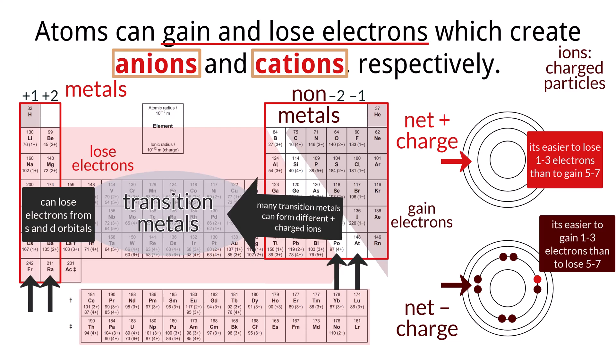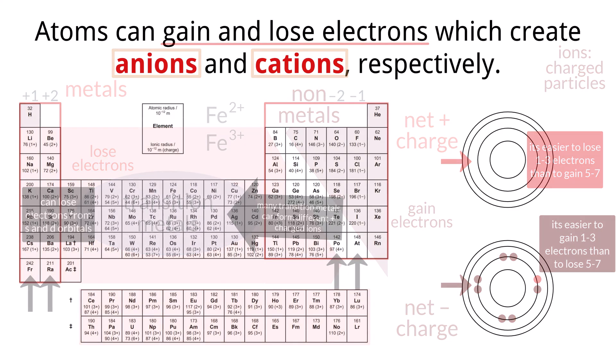For example, iron can commonly exist as iron 2, with a plus two charge, where it has lost two electrons, or as iron 3, with a plus three charge, where it has lost three electrons. The ability of transition metals to form ions with multiple charges is important in many chemical processes and biological systems. The specific charge a transition metal ion adopts can depend on the chemical environment it's in, such as the other atoms or molecules it's interacting with. Understanding this variability is crucial for comprehending the behavior of these elements in different compounds and reactions.